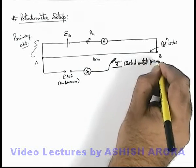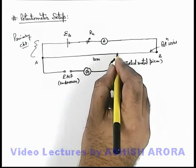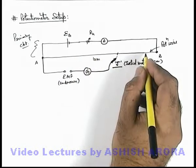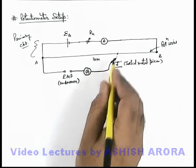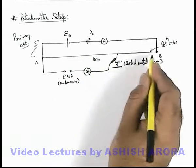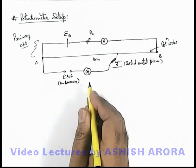Now it is just a solid metal piece because it is kept just to be connected at various points of this wire, so that we can find out the deflection in galvanometer when the jockey is connected to different points. We'll discuss in detail about the working of the system, but